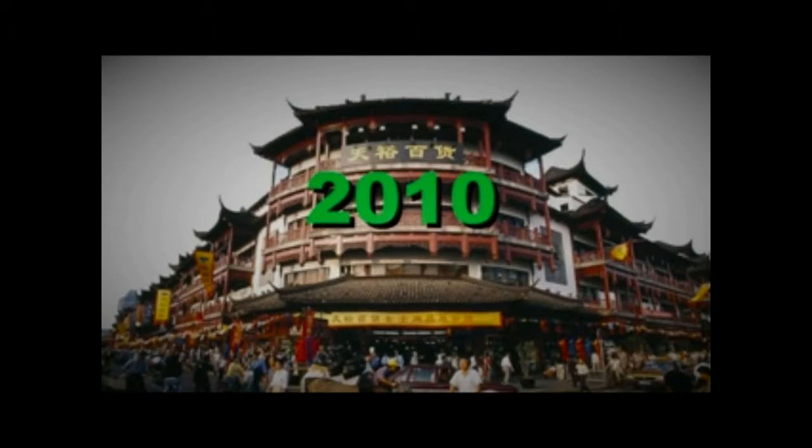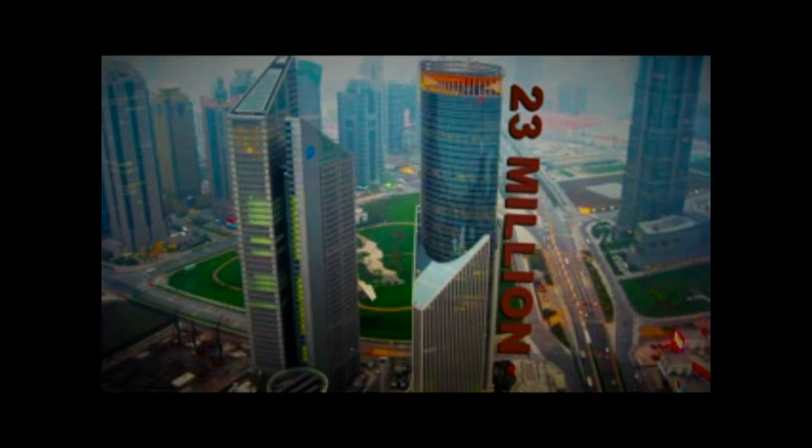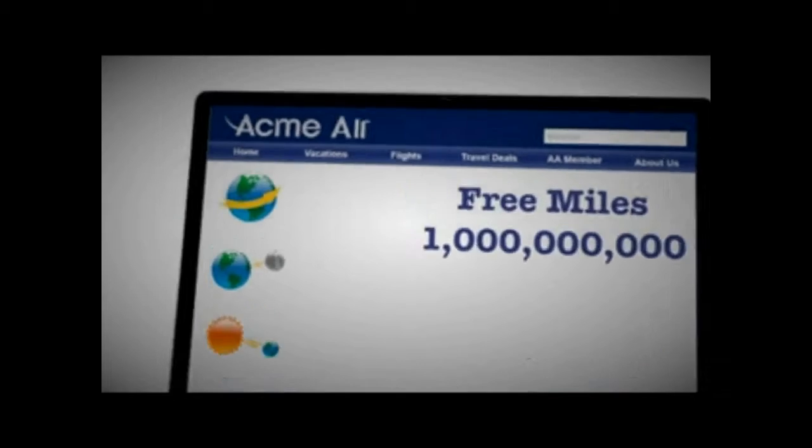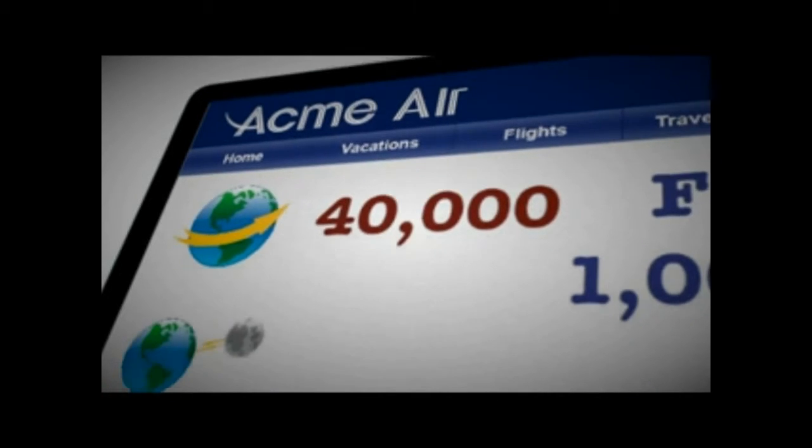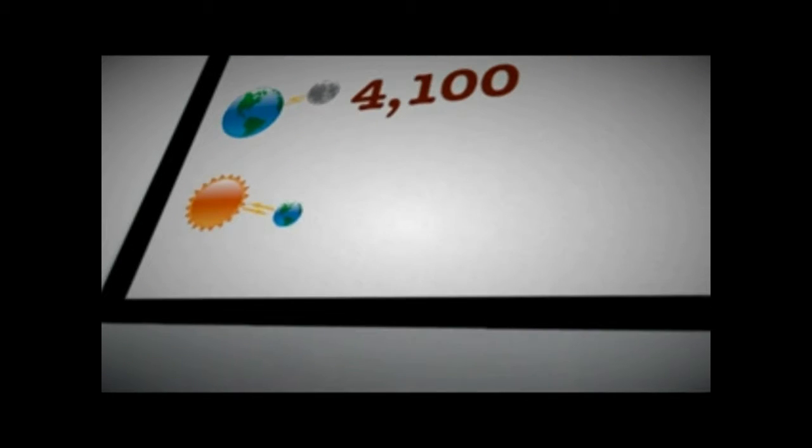In 2010, Shanghai was reported to be the world's largest city by population with over 23 million people. You'd need over 43 Shanghais to accommodate 1 billion residents. If you had 1 billion frequent flyer miles, you could fly around the world 40,000 times at the equator, or fly round trip to the moon 4,100 times, or fly to and from the Sun 10 times with miles left over.